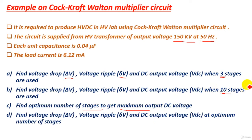Finally, deduce from the values of the voltage drop, ripple voltage, and DC output voltage how the optimum number of stages produces maximum output DC voltage.